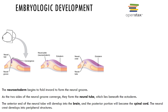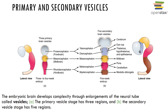The anterior end of the neural tube begins to enlarge forming three prominent divisions — the primary brain vesicles: the forebrain, the midbrain, and the hindbrain. Around week 5 of development the primary brain vesicles have changed position and the forebrain and hindbrain have further subdivided to form secondary brain vesicles. The midbrain does not significantly change during development.